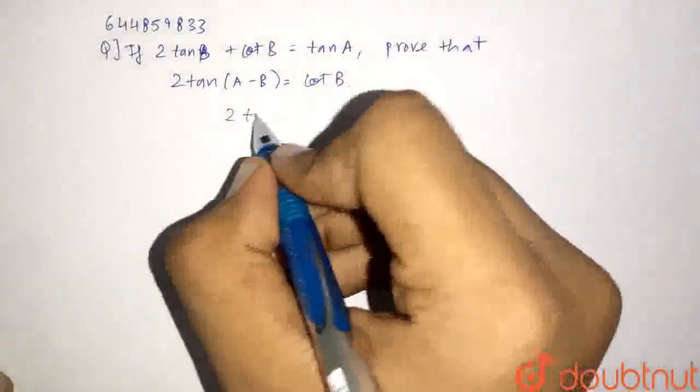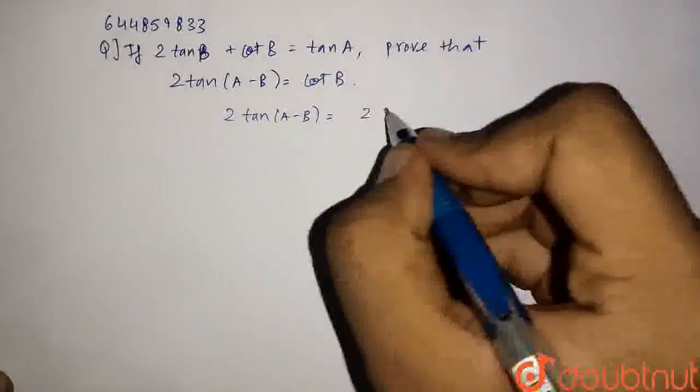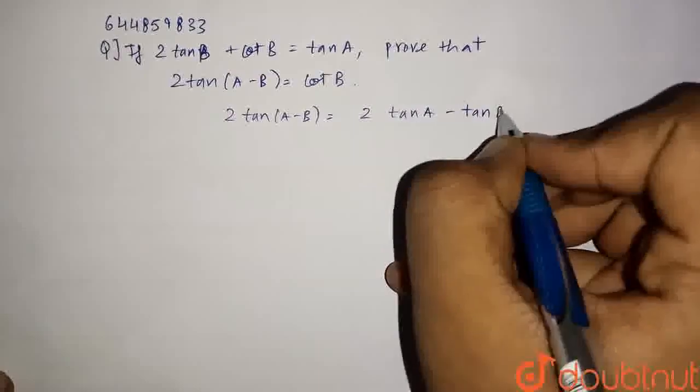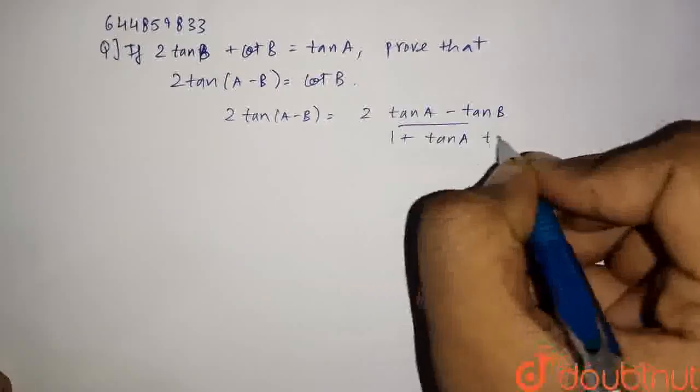Therefore, 2 tan of a minus b equals 2 times tan of a minus b, which is tan a minus tan b whole upon 1 plus tan a tan b.